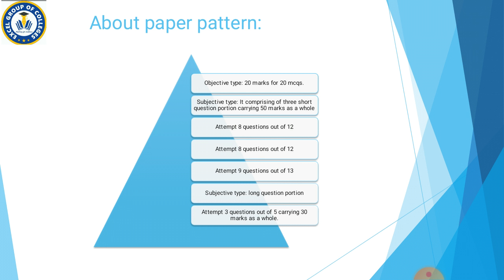Paper pattern ki baat ki jaye toh yeh based hai objective type aur subjective type pe. Objective type mein aap ke paas 20 MCQs aayenge jinnke 20 marks honge. Subjective type ki baat ki jaye toh short questions ke teen portion honge jinnke total marks aap ke paas 50 honge. First portion mein aap 12 mein se 8 questions attempt karenge, second portion mein 12 mein se 8, aur third portion mein 13 mein se 9 questions attempt karenge. Long questions ka portion 30 marks ka hoga jinn mein se 5 mein se 3 long questions aap hal karenge.